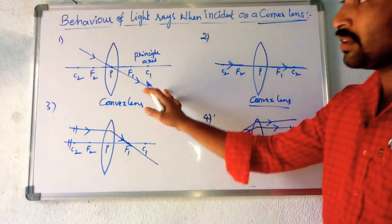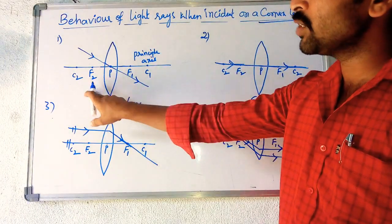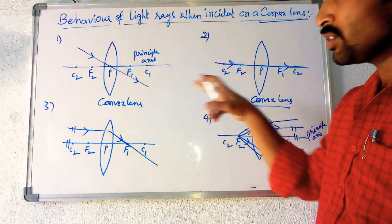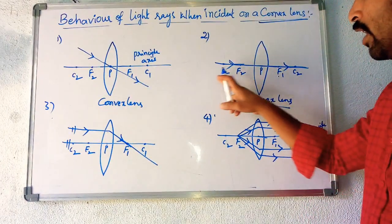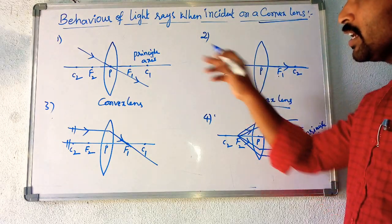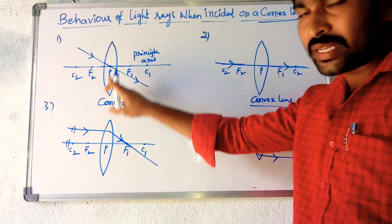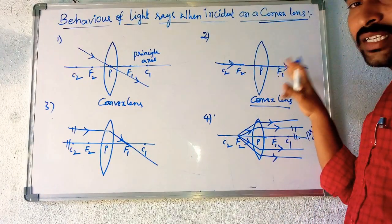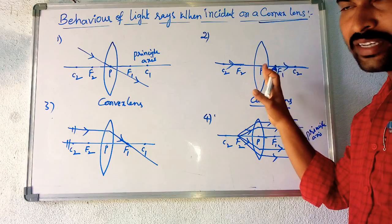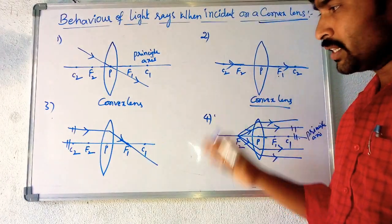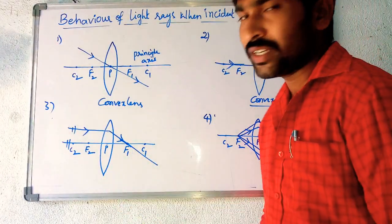So to recap: the first rule is when a ray passes through the optic center, it is undeviated. The second rule is when a ray passes along the principal axis, it is also undeviated. These two situations both result in no deviation. The third major rule is when the incident ray is parallel to the principal axis.